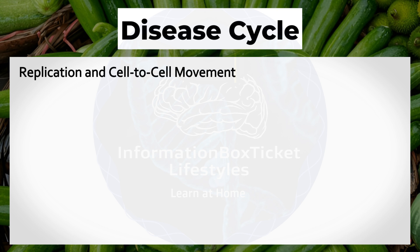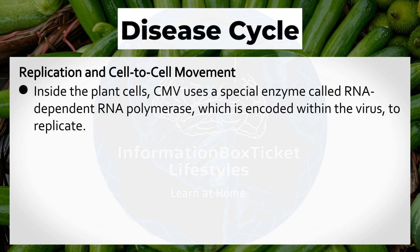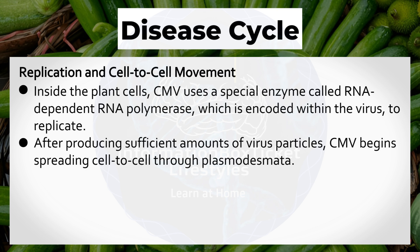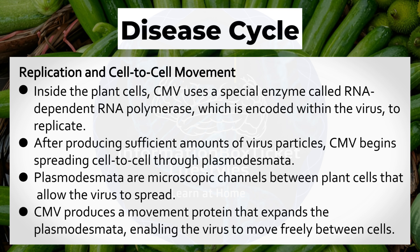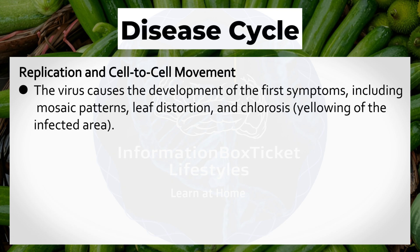Replication and Cell-to-Cell Movement: Inside the plant cells, CMV uses a special enzyme called RNA-dependent RNA polymerase, encoded within the virus, to replicate. After producing sufficient virus particles, CMV begins spreading cell-to-cell through plasmodesmata — microscopic channels between plant cells. CMV produces a movement protein that expands the plasmodesmata, enabling the virus to move freely between cells. The virus causes the development of the first symptoms, including mosaic patterns, leaf distortion, and chlorosis (yellowing) of the infected area.